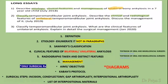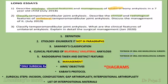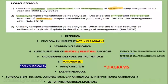Before answering any essay on TMJ ankylosis, check the question carefully for what headings are specifically asked. For example, the first question asked etiology, clinical features, and management — mention only these three. The second question asked to classify TMJ ankylosis and then describe clinical and radiographical features — do not write etiology. Management is common across all three versions of the question. This is how you answer an essay on TMJ ankylosis.